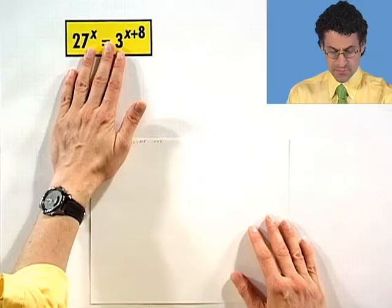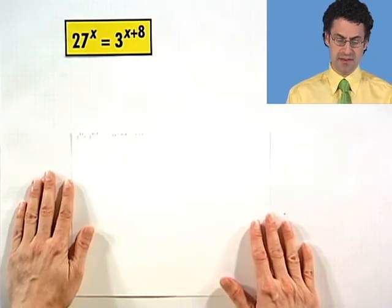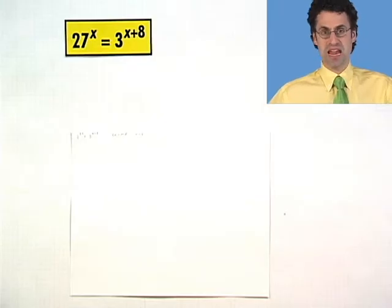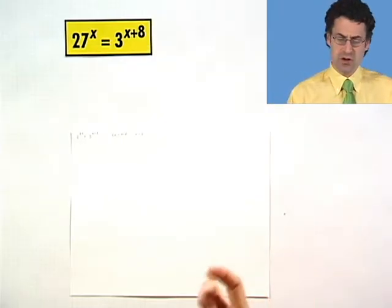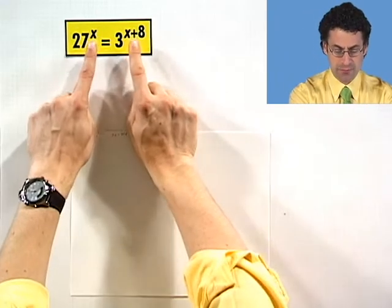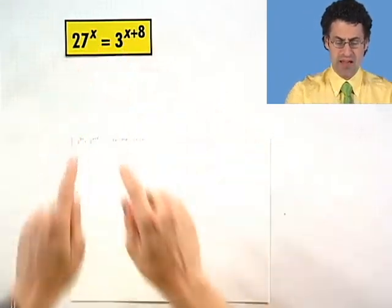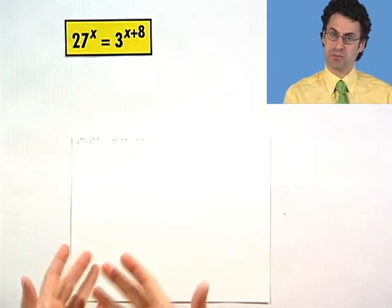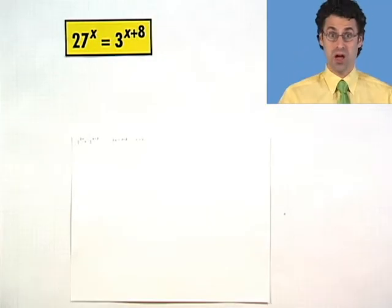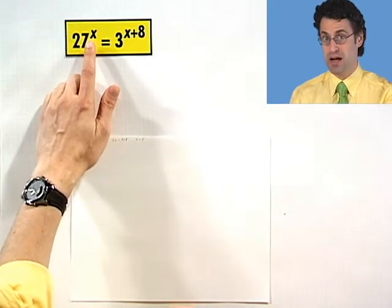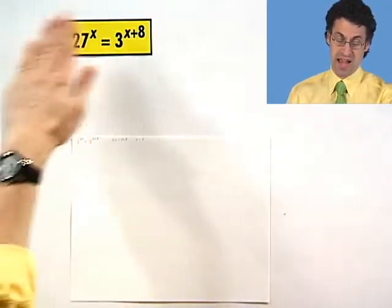So the first one is really exotic. 27 to the x power equals 3 to the x plus 8 power. Why is it so exotic? Well because notice that the thing we don't know is actually the exponent. Usually we have things like x to the 2 power, where it's the x we don't know but the 2 exponent we know, so we have a quadratic. This is not. This is an exponential thing where the unknown is the power.